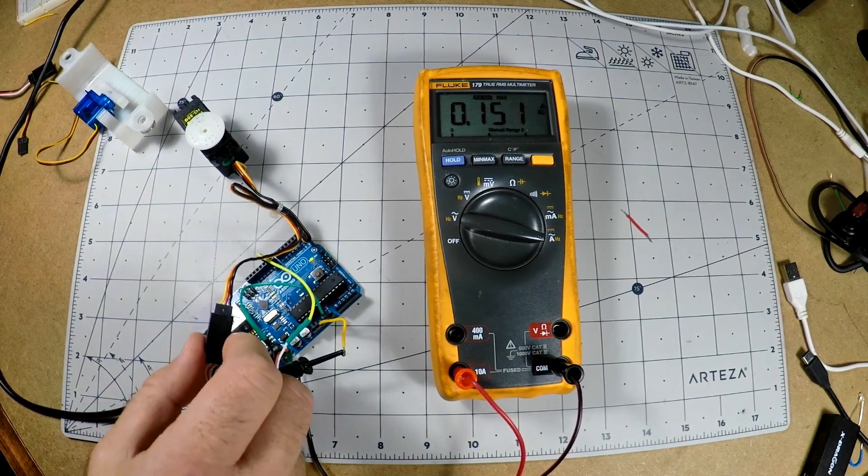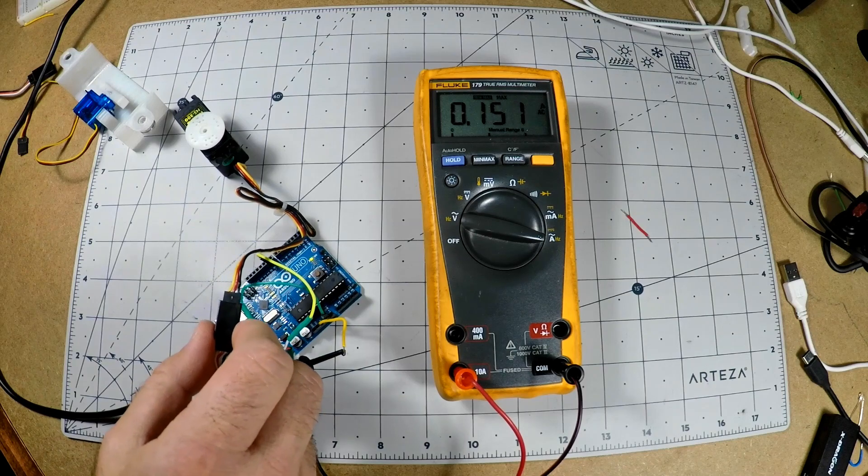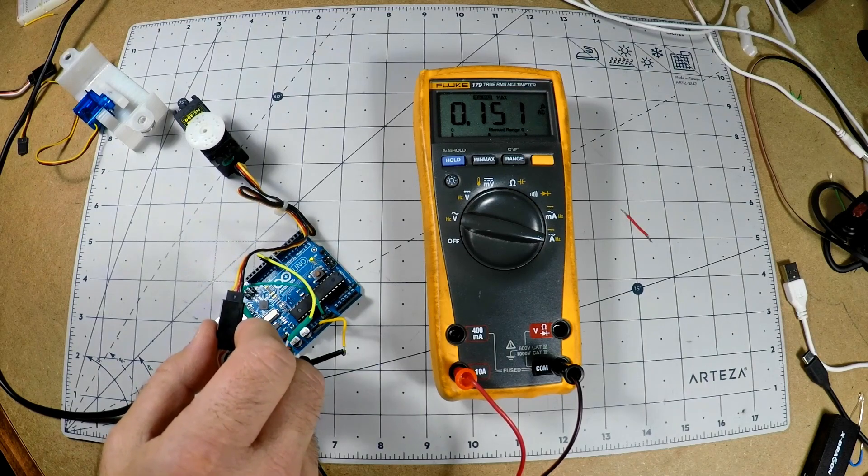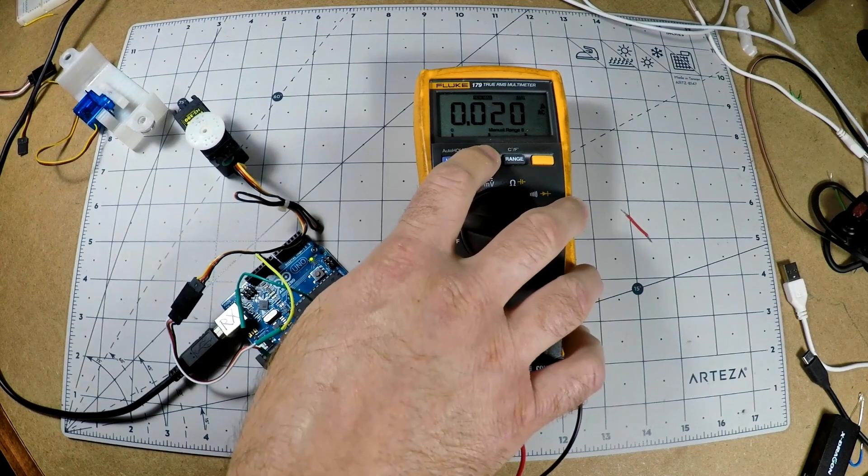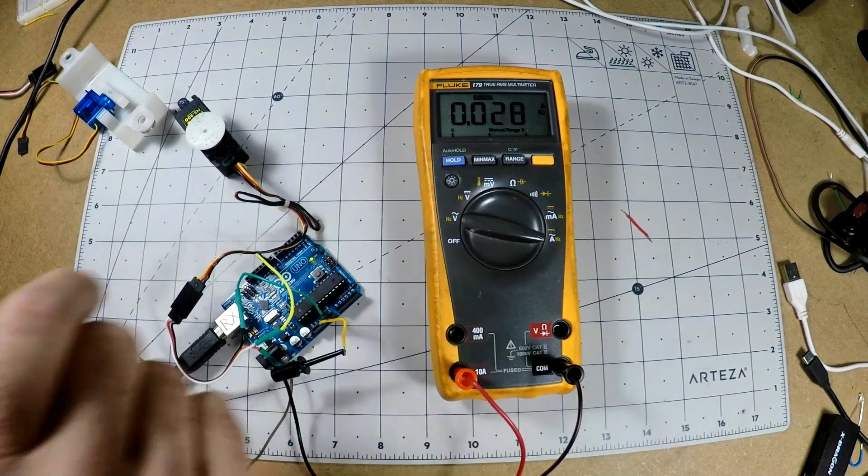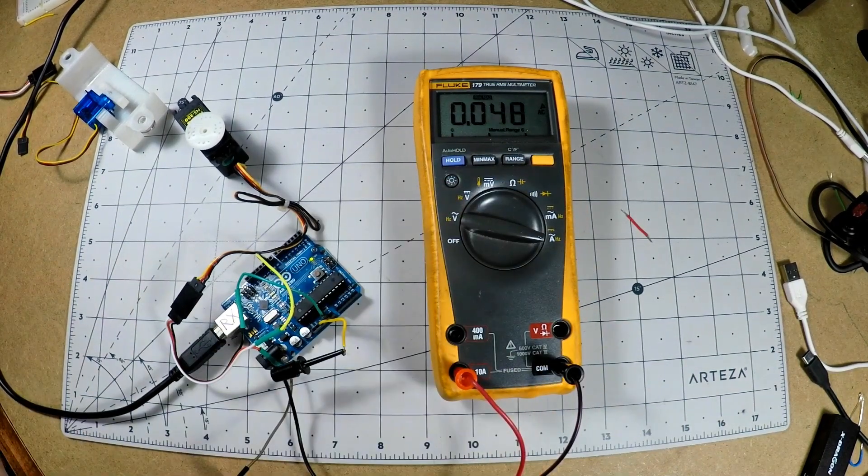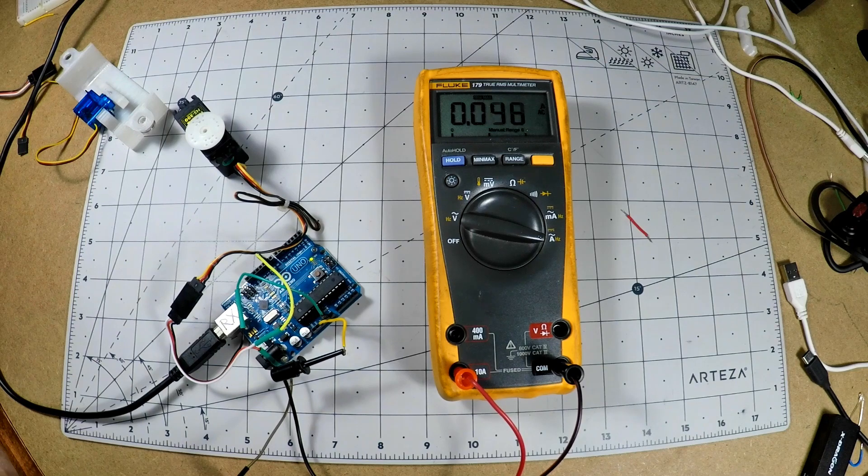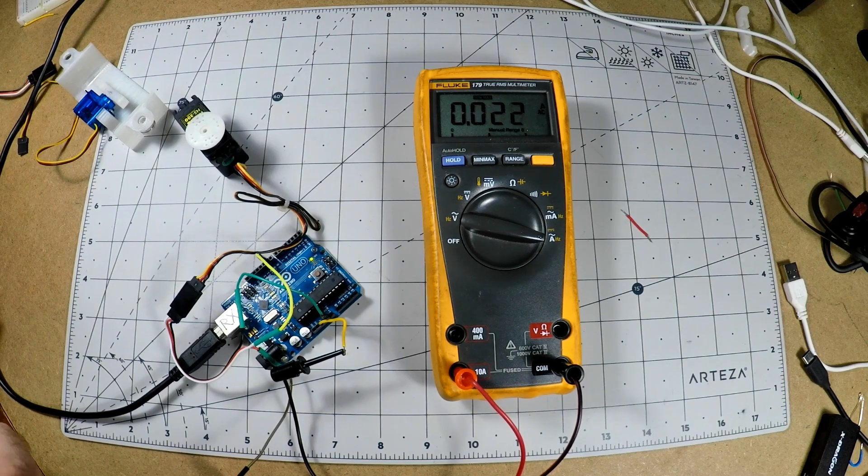And that's just for the servo itself, not for any of the other Arduino functions. From there, I switched the multimeter to just the instantaneous reading, and it goes down quite a bit as the servos attached and detached, or in use or not in use.